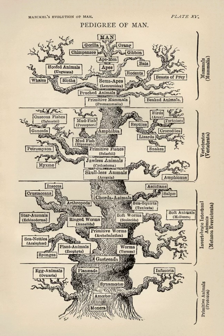In biology, function has been defined in many ways. In physiology, it is simply what an organ, tissue, cell or molecule does. In evolutionary biology, it is the reason some object or process occurred in a system that evolved through natural selection. That reason is typically that it achieves some result, such as that chlorophyll helps to capture the energy of sunlight in photosynthesis. Hence, the organism that contains it is more likely to survive and reproduce — in other words, the function increases the organism's fitness.